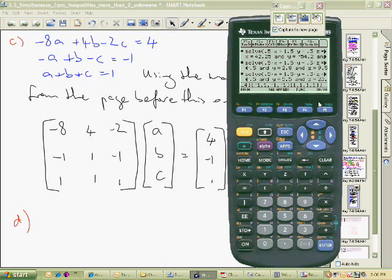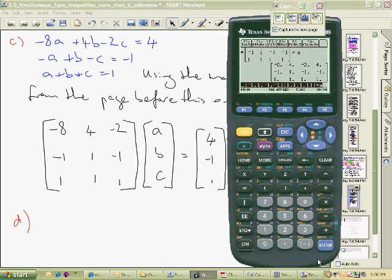We've entered three rows, and along here you can see what those rows are. Now we need to define this as a matrix using the alpha function and store it in what's called an alpha location. To do that, we press the store button, which puts that arrow there. Then alpha - I'm just going to use A. I could use any letter I like, but I don't think I've got anything else stored. So I'll use A, then enter.